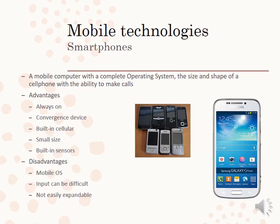It's small, which is convenient, and it has a lot of built-in sensors. The disadvantages are that the mobile operating system can be restricted — you can't do everything on it that you can do on your computer. Input can be difficult because of the small keyboard, and it's not easily expandable.